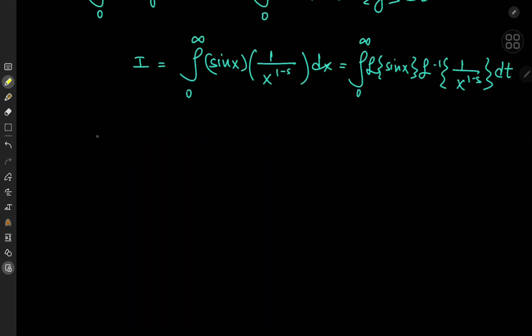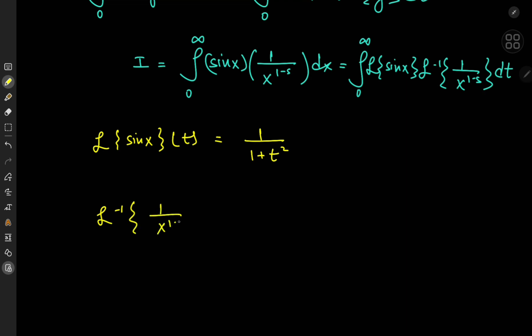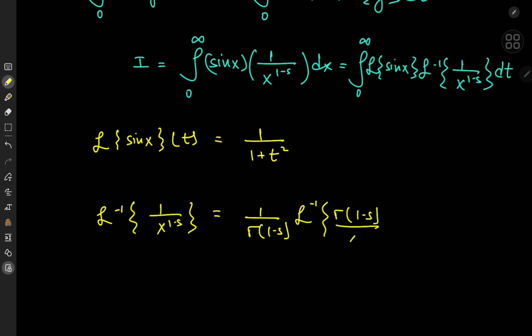The first thing we want is the Laplace transform of the sine function. Using our table of Laplace transforms, the Laplace transform of sine as a function of t gives us one over one plus t squared. For the inverse Laplace transform of one over x to the one minus s, we expand using gamma of one minus s, giving us one over gamma(1-s) outside times the inverse Laplace transform of gamma(1-s) divided by x to the one minus s.